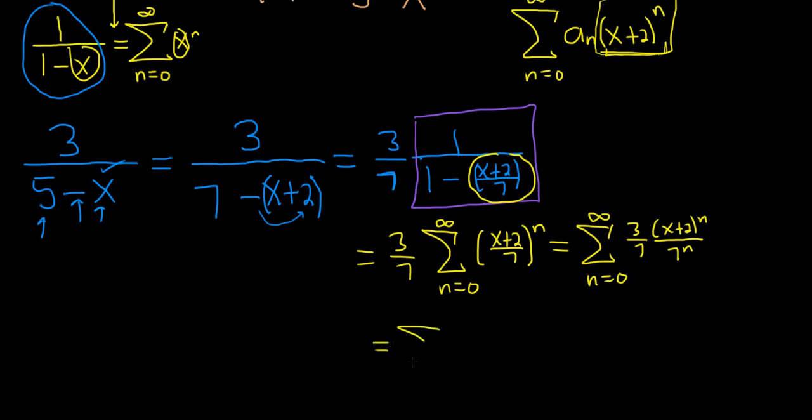And then one more step for simplification. This is the infinite sum as n runs from 0 to infinity of 3 times x plus 2 to the n, and then here you have 7 to the 1 times 7 to the n, so that's 7 to the n plus 1. So this would be the power series representation for our function.